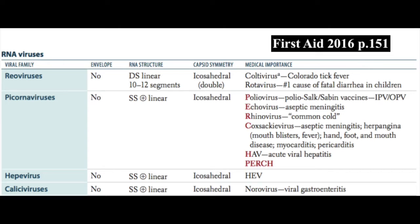The picornavirus family has a single-stranded positive linear RNA genome and icosahedral capsid symmetry. It includes the polioviruses — remember that we have two vaccines, the Salk and the Sabin vaccines, and we also have the intramuscular as well as the oral polio vaccines, IPV and OPV.